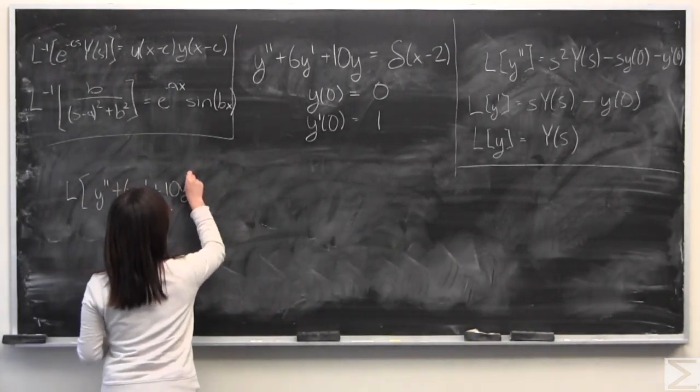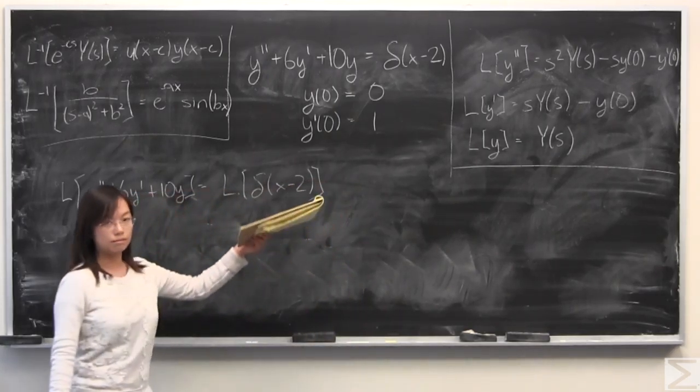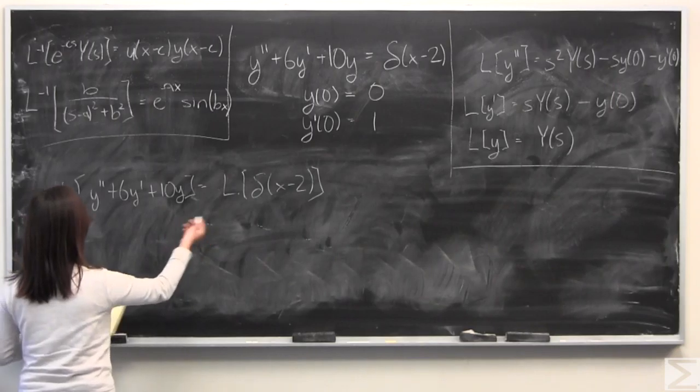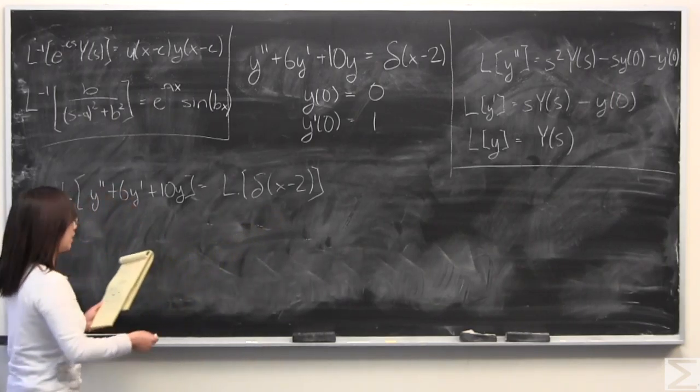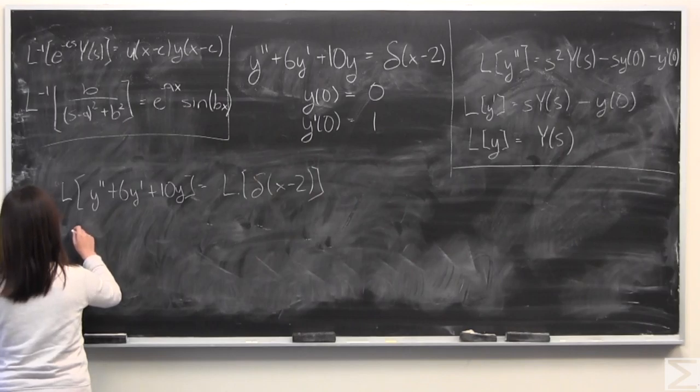So I'm going to go ahead and take these Laplace transforms, and I've given you basically what you need up there. All you need to do is take the Laplace transform of the delta as well, and you'll see that gives you e to the power of negative 2s.